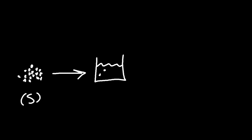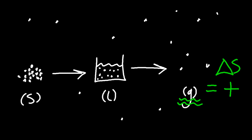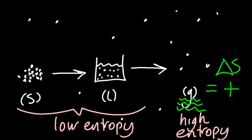So if I have a solid and it turns to a liquid, I'm increasing the amount of disorder there. And the liquid, if it turns to a gas, is even more disordered now — less of a regular arrangement. So delta S for those processes is plus. Disorder and entropy are increasing. The gas has the highest entropy relative to the others, and a solid and a liquid obviously have low entropy.